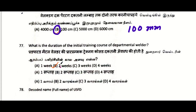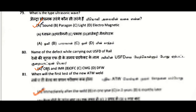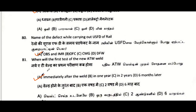What is the duration of the initial training course of the departmental welder? Ultrasonic wave is a sound wave. Name of the defect while carrying out USFD of the rail: during USFD testing of rails the defects are oblique and IMR.